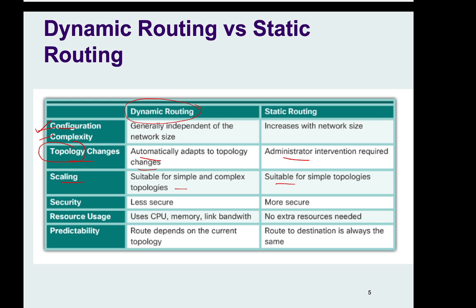Dynamic routing is less secure, whereas static routing is more secure. In dynamic routing, routers exchange information with each other — one router tells another router about routes. So whenever you are exchanging information, there is always a security risk; if someone hacks that information, the hacker gets to know about the routes and networks you are connected to. With static routing, you manually configure the router yourself, so routes are harder for others to discover.